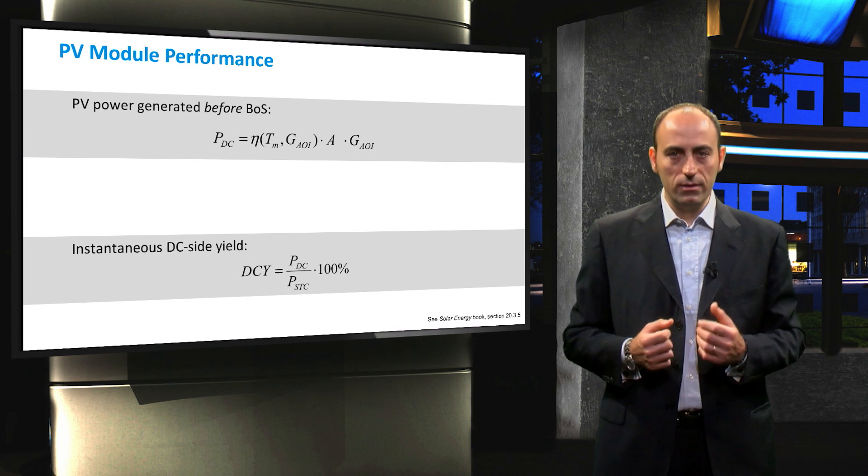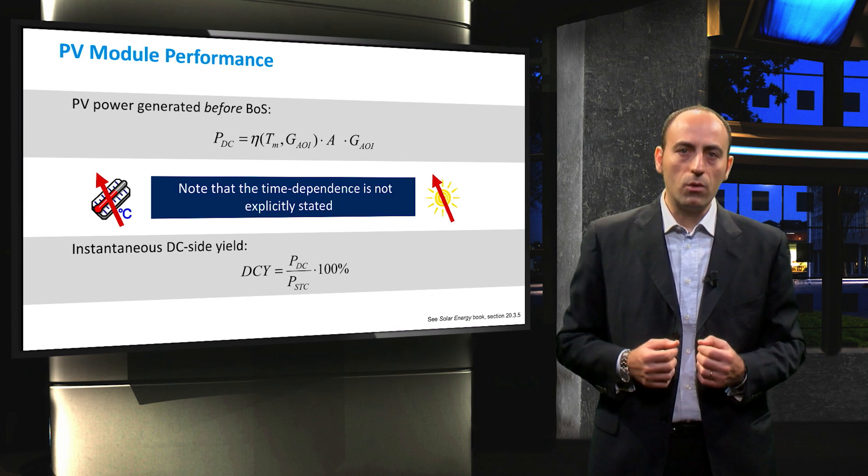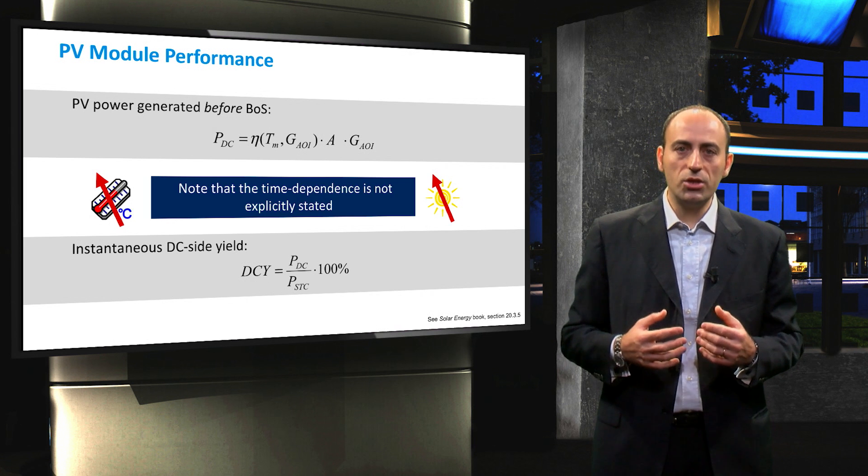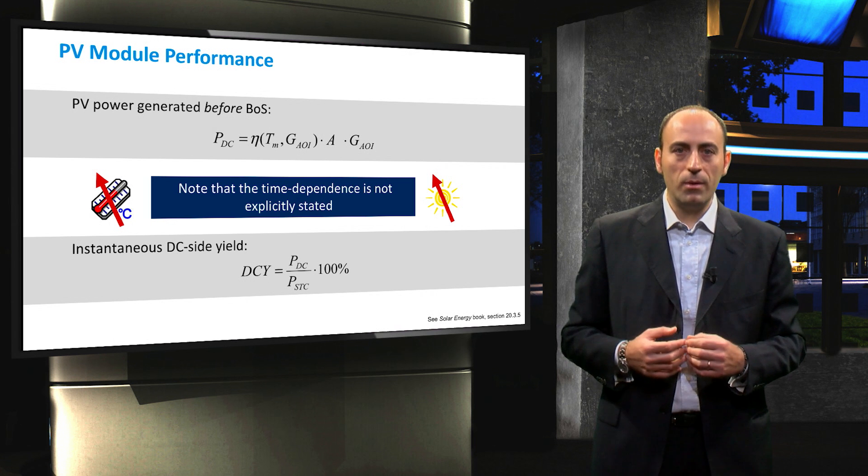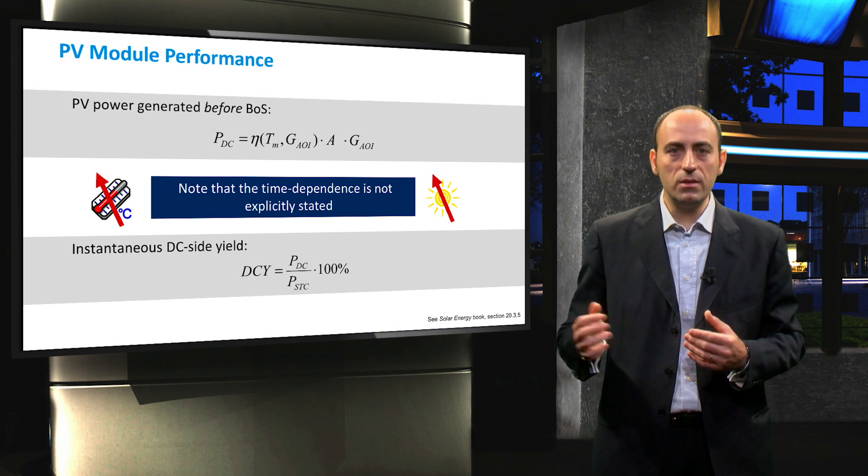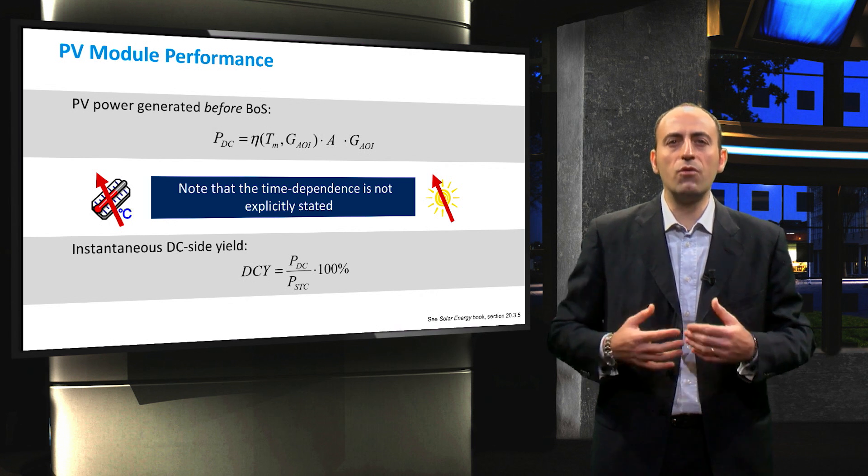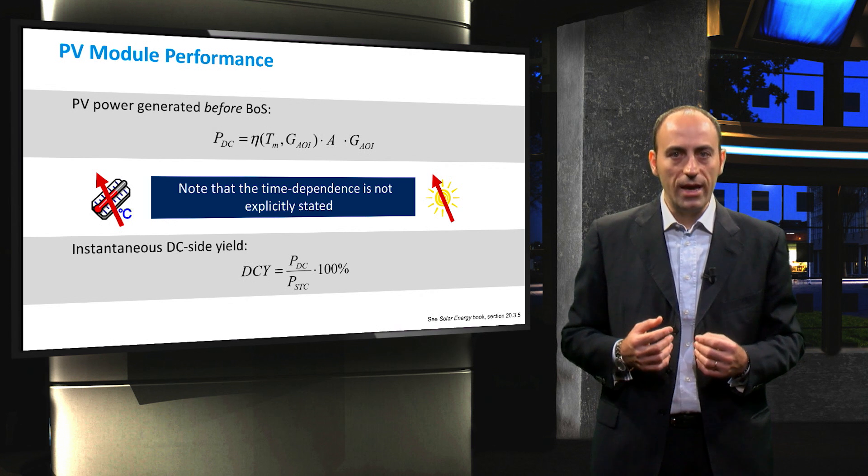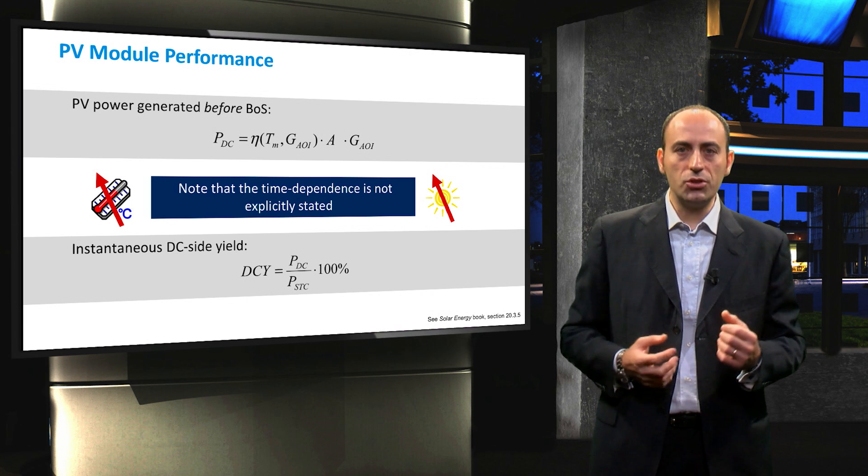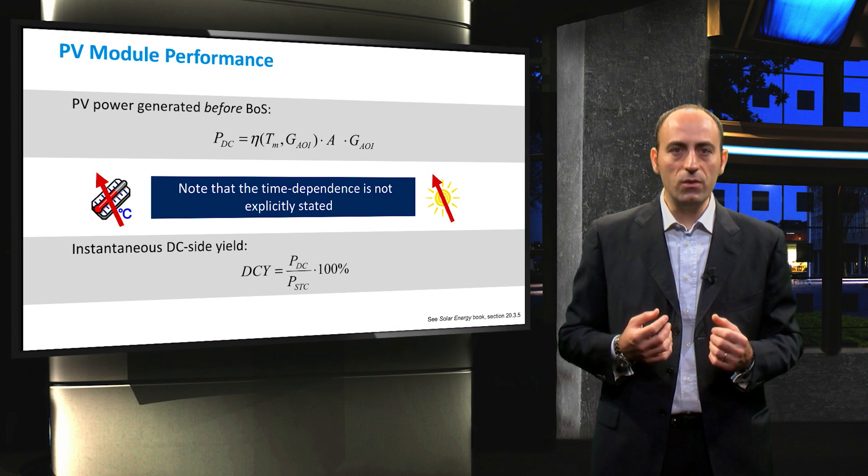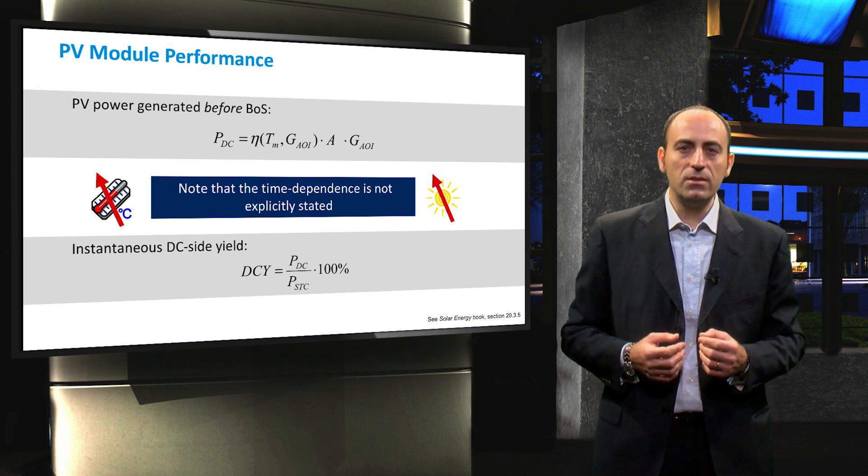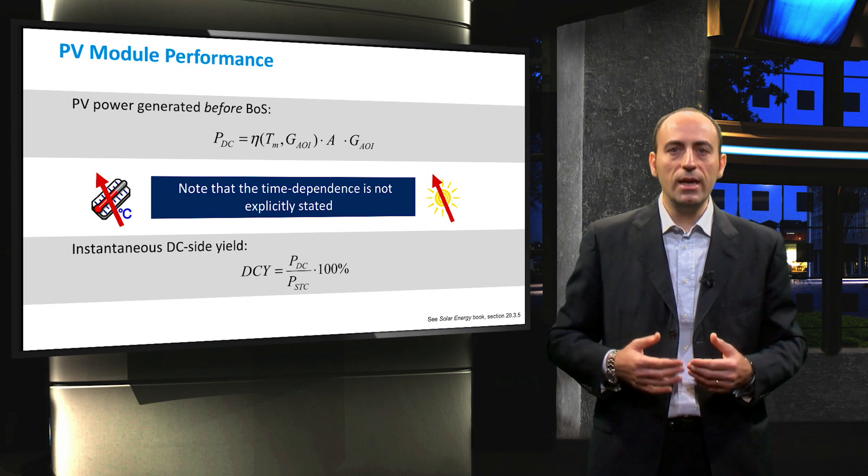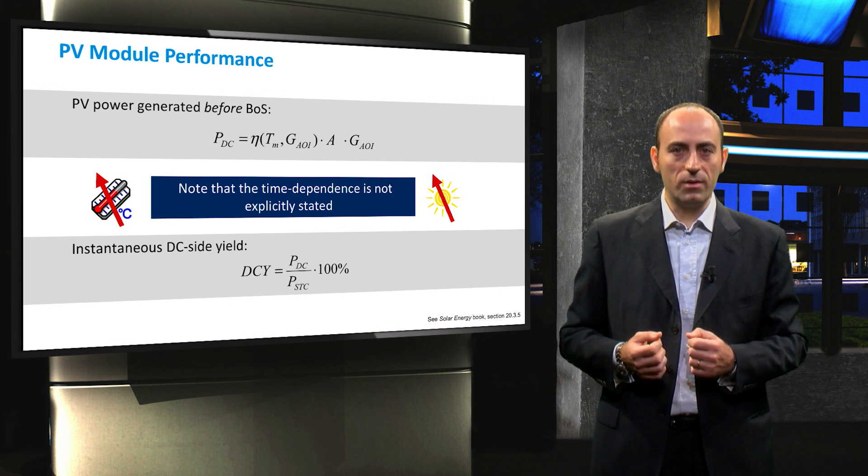Before we conclude, we stress that this equation is time dependent, but such a dependency is not explicitly stated here for the sake of reporting a tidy equation. So in every moment of the day, a pair of module temperature and incident irradiance values exists. As this is an instantaneous information, it can be used for discrete time simulations.